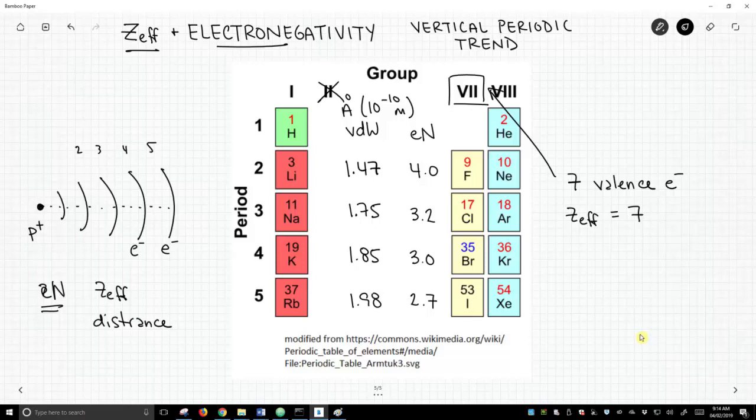So when we talk about effective nuclear charge, it does affect electronegativity in a most pronounced way as we go horizontally across the periodic table. When we look at vertical trends in the periodic table, the electronegativity is not driven so much by changes in effective nuclear charge, but the distance over which the attraction is felt by the electrons to the protons.